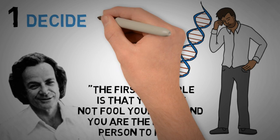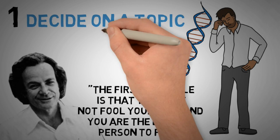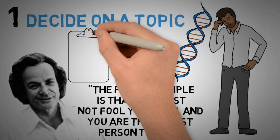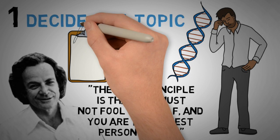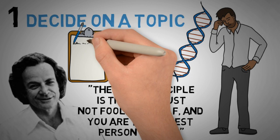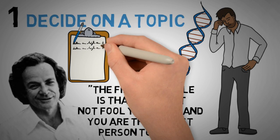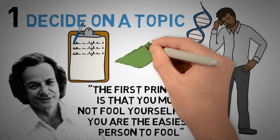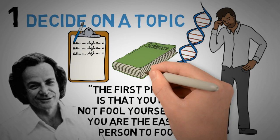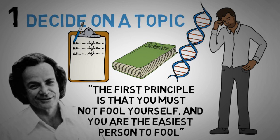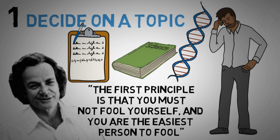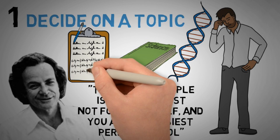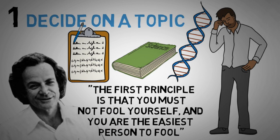Step number one is to decide on a topic you want to understand and simply write down what you already know about it on paper. When you've written down what you already know, begin studying the subject. Whenever you learn something new, add it to your paper. Eventually you will have a pretty good list of things you understand about it.